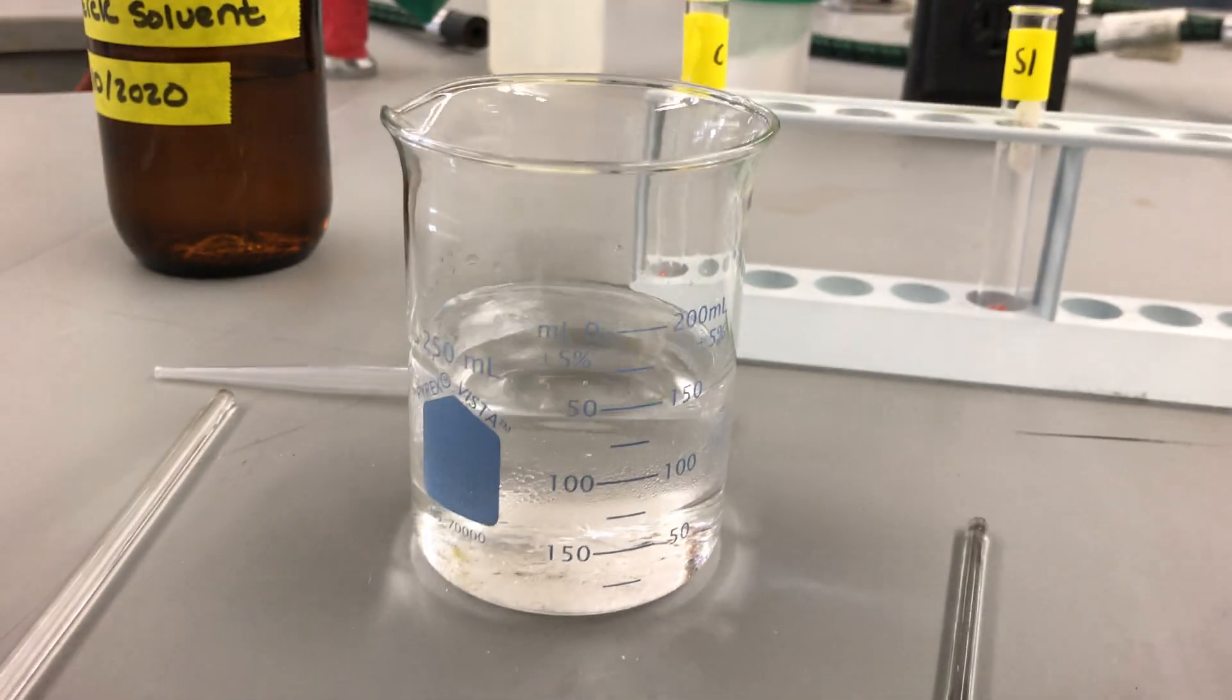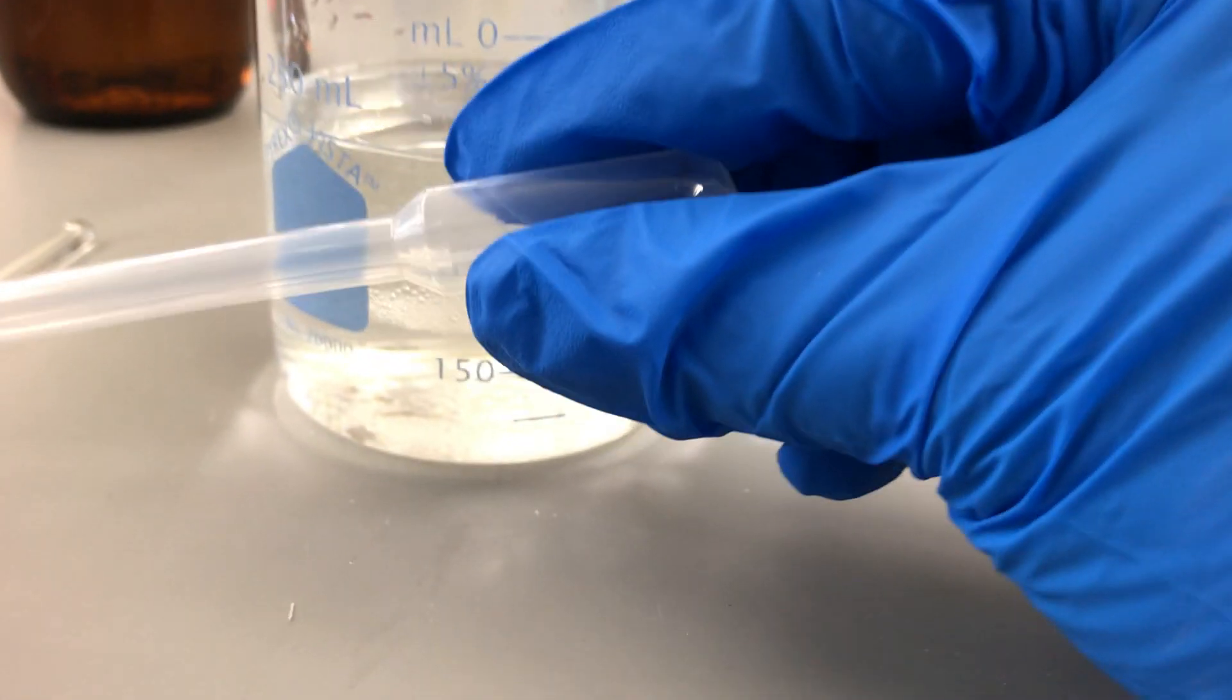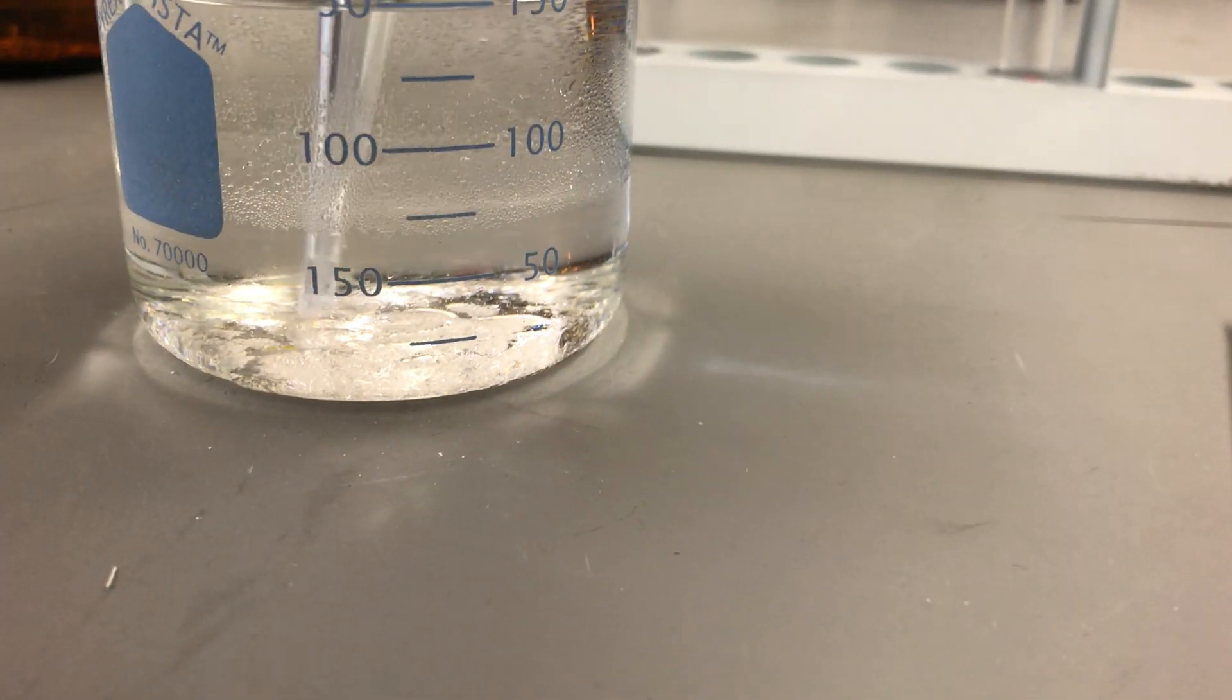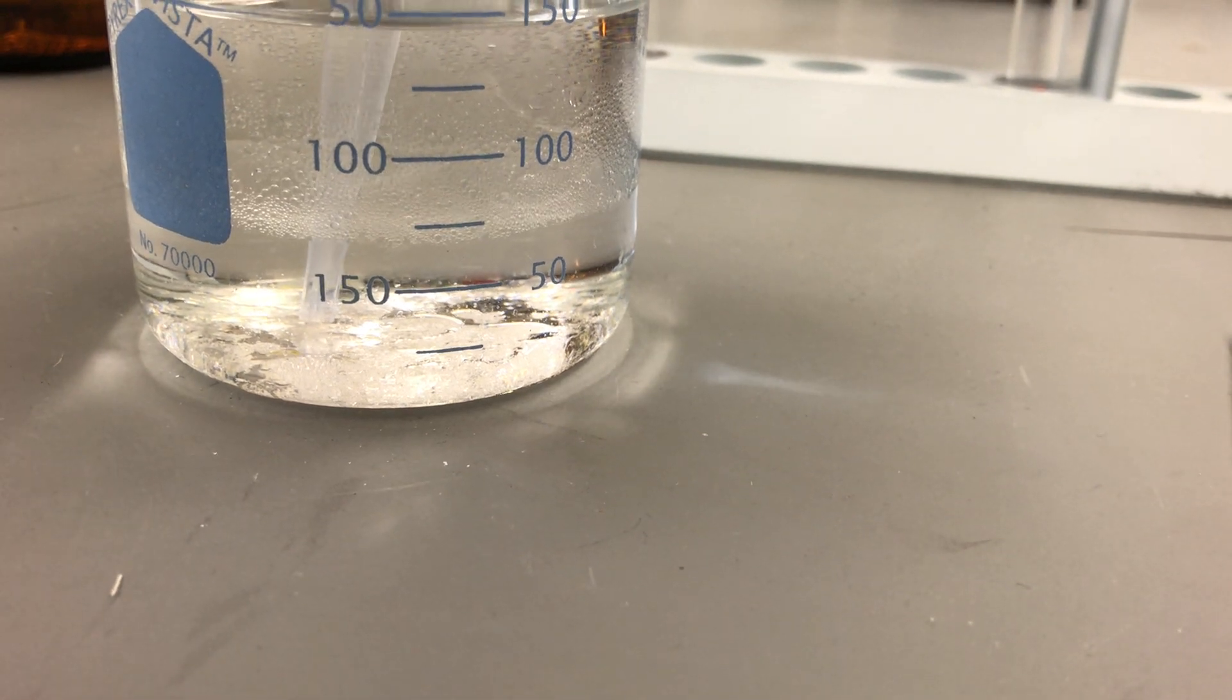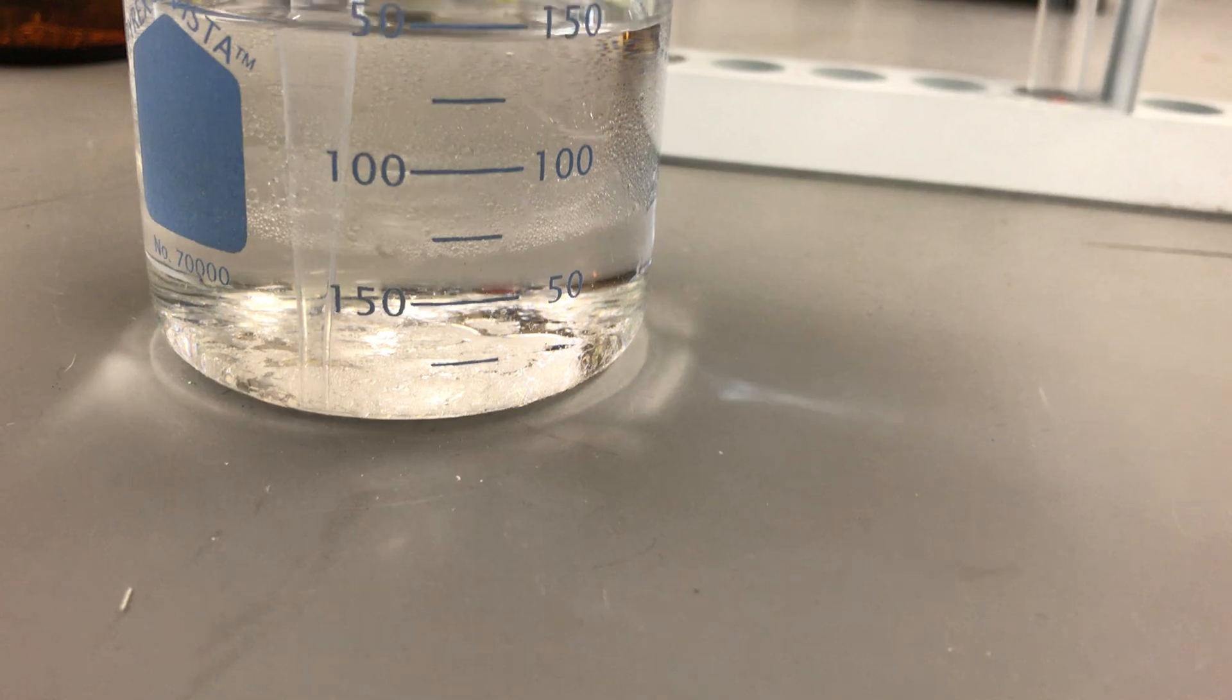Place our solvent, we have our dropper pipette. We're going to squeeze the bulb of the pipette like so, place it all the way to the bottom layer, and suck some up by releasing the bulb.